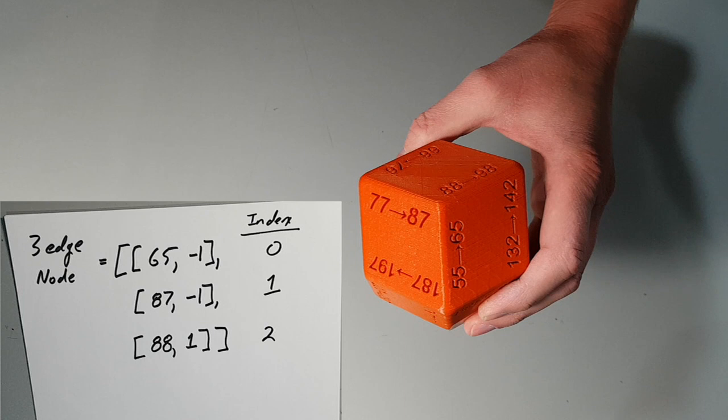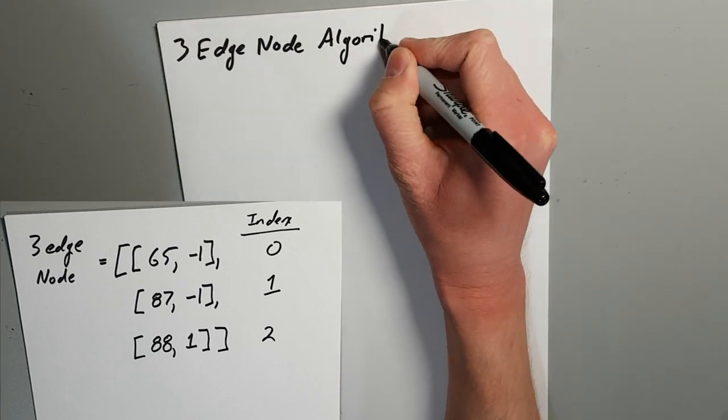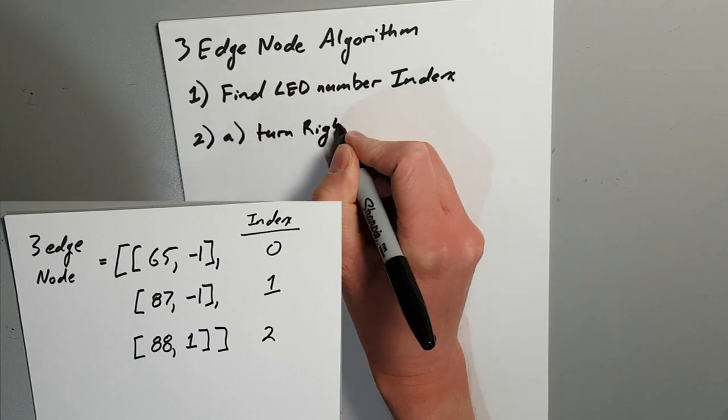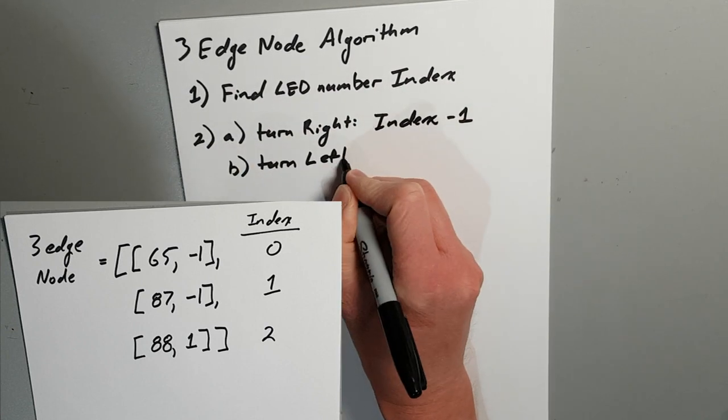And to turn left, we increase the index by 1 to obtain 2, and thus go to LED 88. This is the algorithm that will be used to travel through all the three edge nodes: get the LED number index, subtract 1 to turn right, add 1 to turn left.